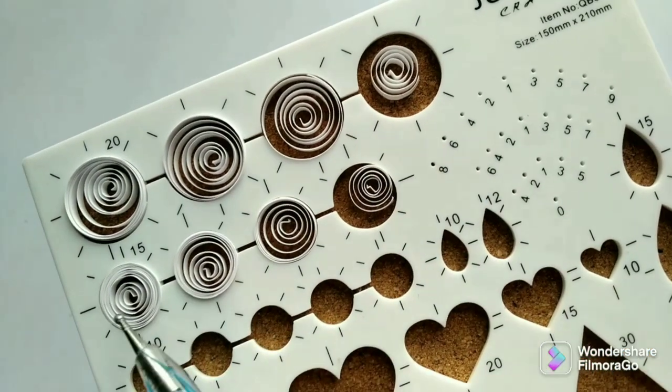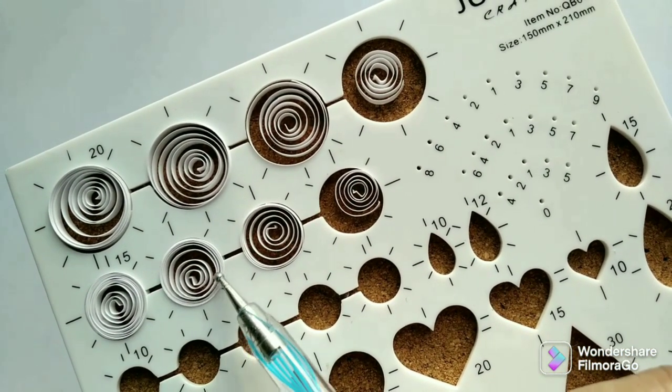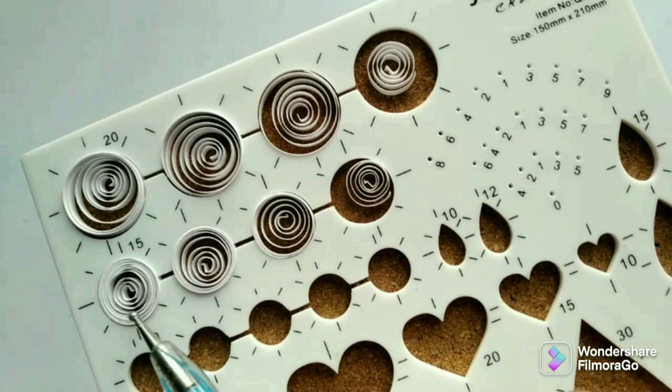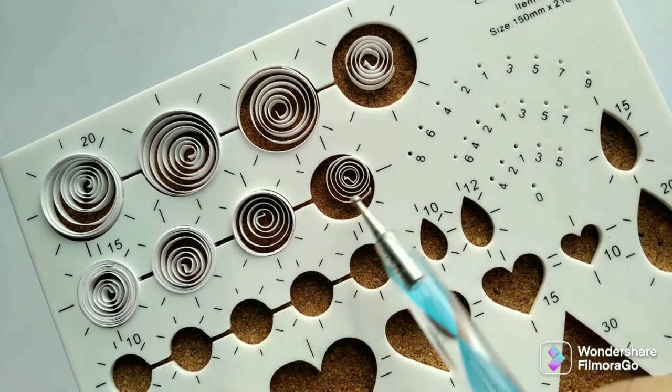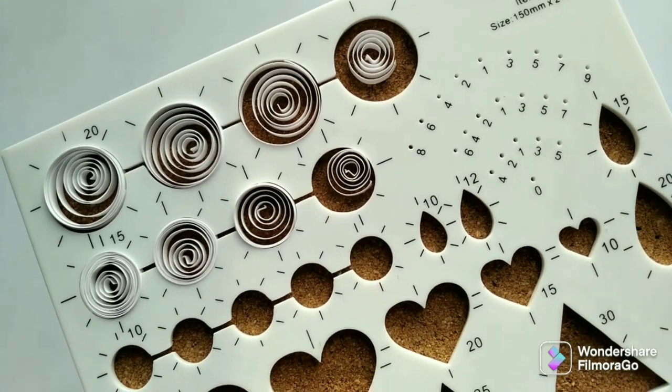Similarly, when we see the next row made with size 15 circles, the full strip shows more crowded towards the border, three-fourths strip is also a little crowded, half strip is almost right, and the quarter strip is too small.